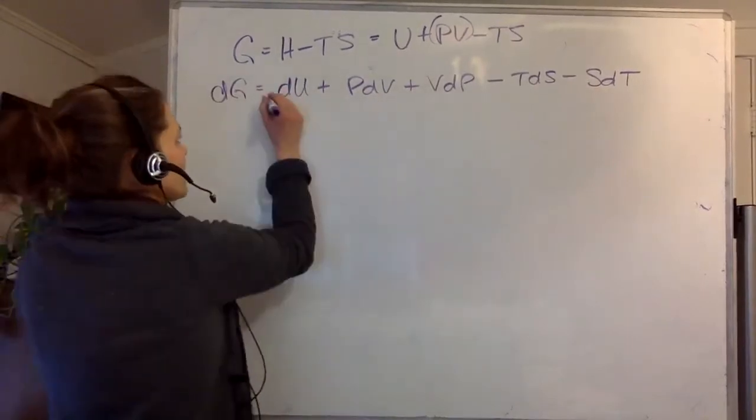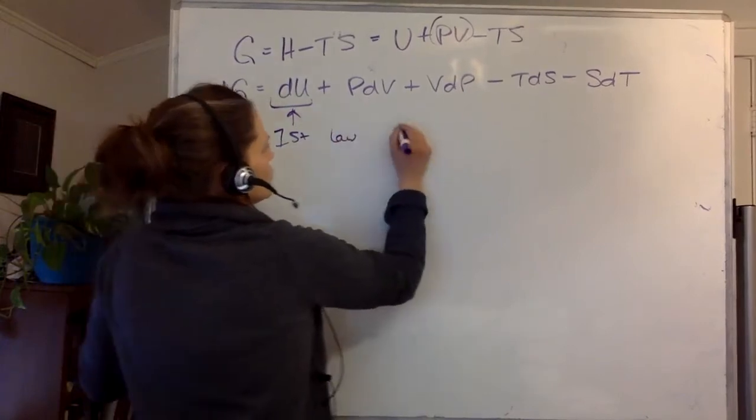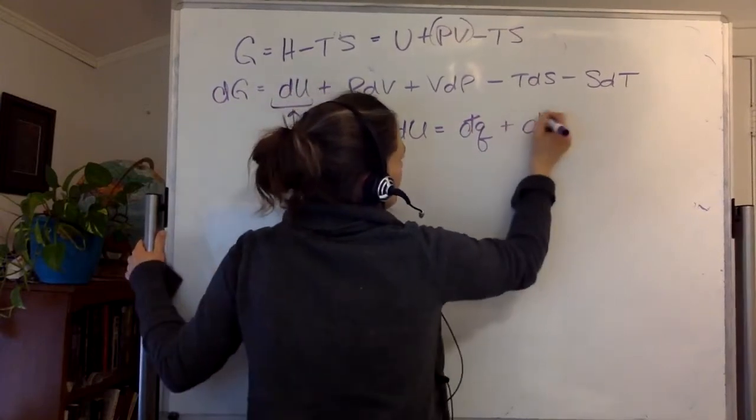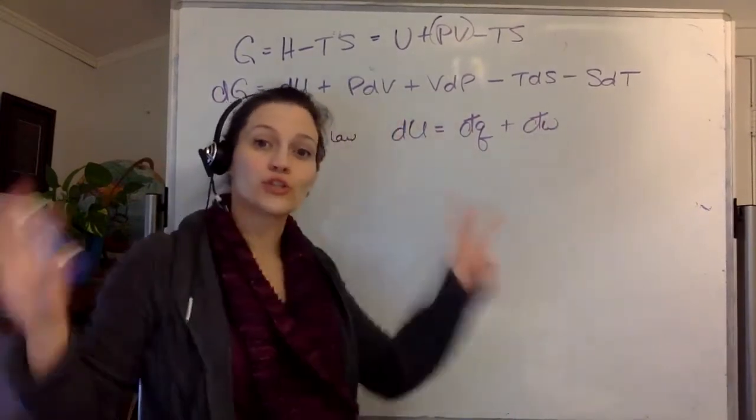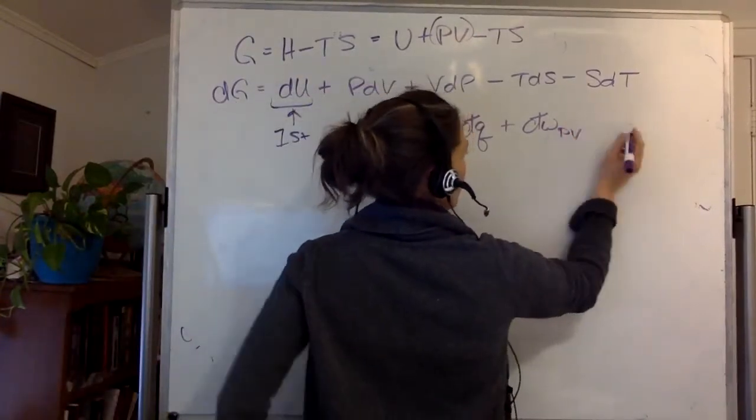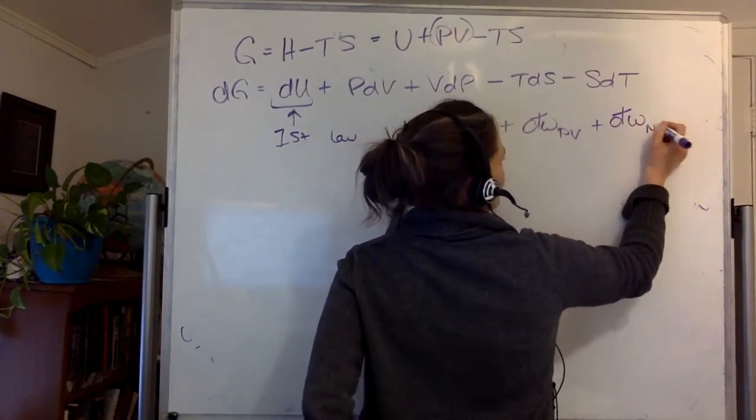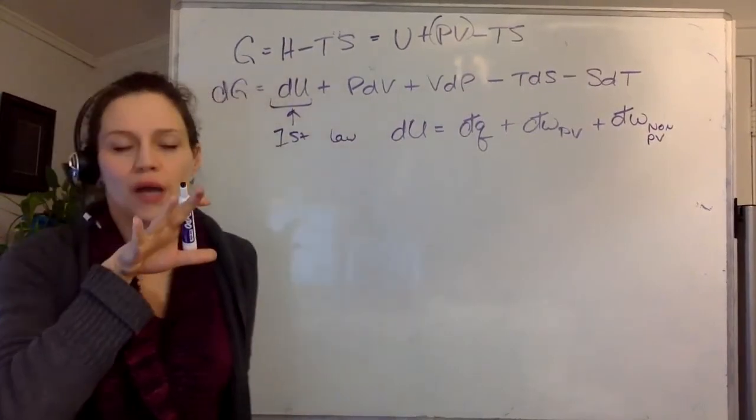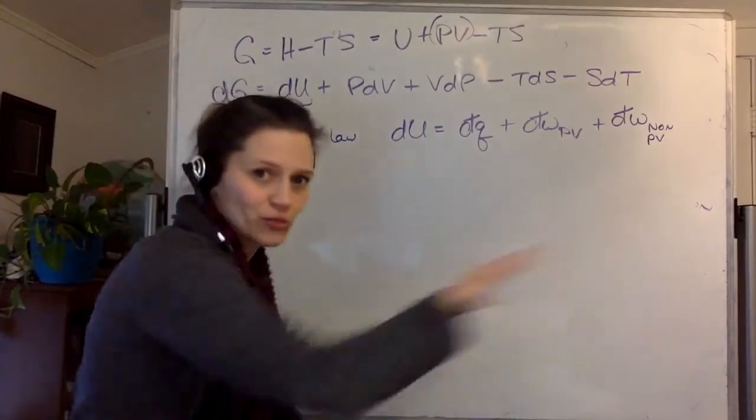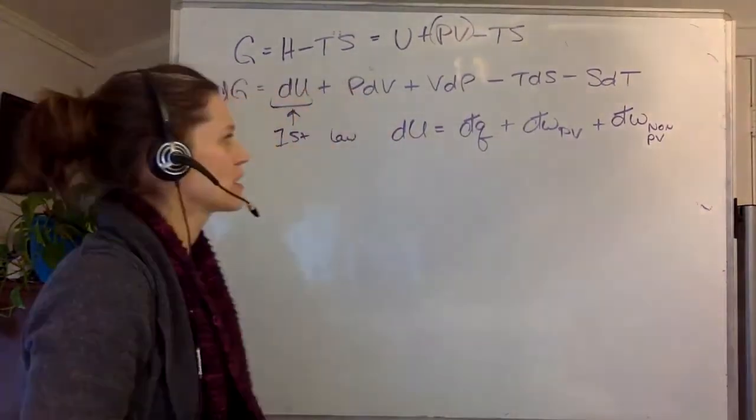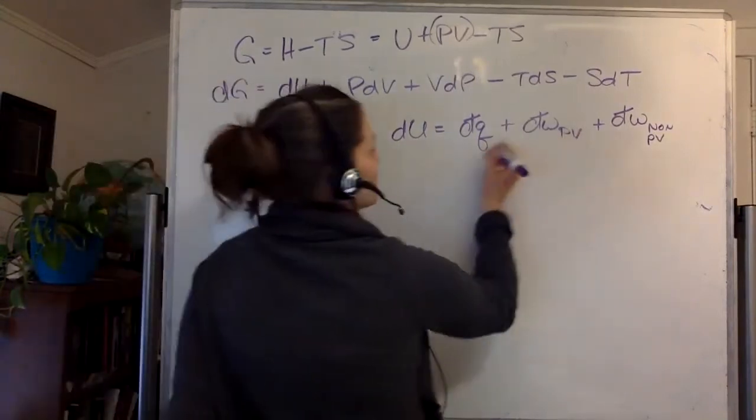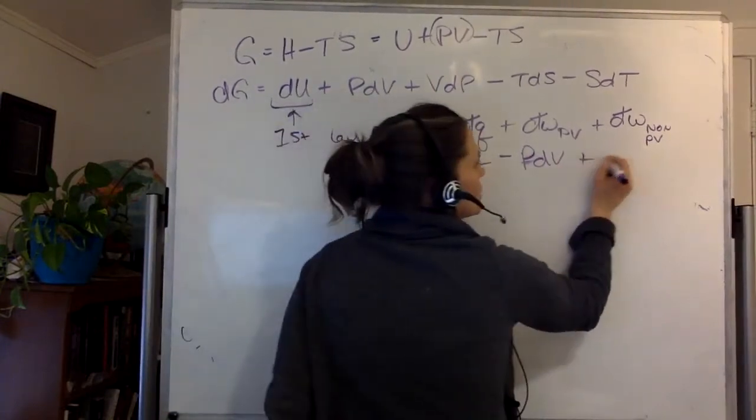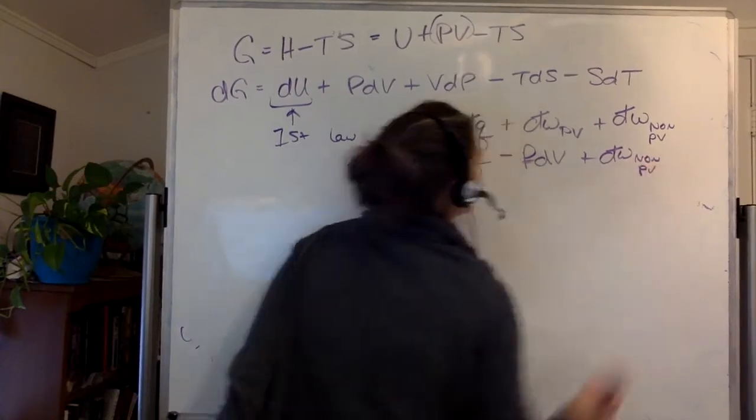Now I'm going to dive in a little bit closer here and look at first law, which dU is equal to dQ plus dW. And I'm going to break the work up into two different components. I'm going to call this pressure volume plus the change in the work which is non-pressure volume. Because I know when dealing with the Gibbs energy, I'm dealing with expansion work and non-expansion work. So there's my expansion work, and there's my non-expansion work. And this is equal to minus PdV, which is expansion work, plus dW non-pressure volume.